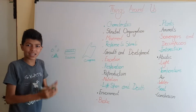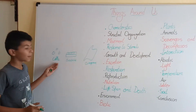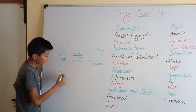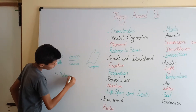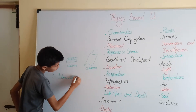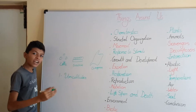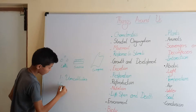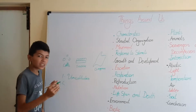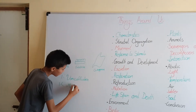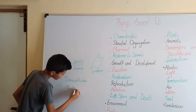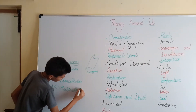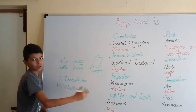We can classify organisms based on the number of cells they have. If they have one cell, we call it unicellular. When they have more than one cell, we call it multicellular.